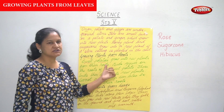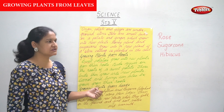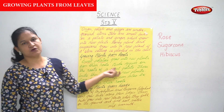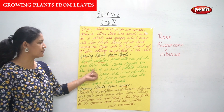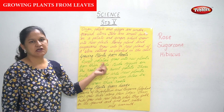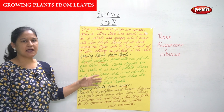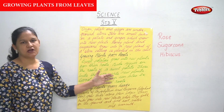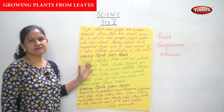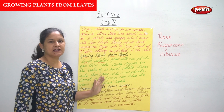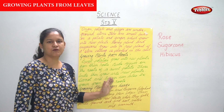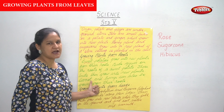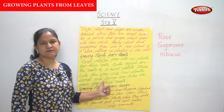Moving on to growing plants from roots: sweet potatoes grow into new plants from their roots. Buds appear on the roots of a sweet potato and these buds later grow into a new plant. Carrot and turnip can also be grown from their roots.